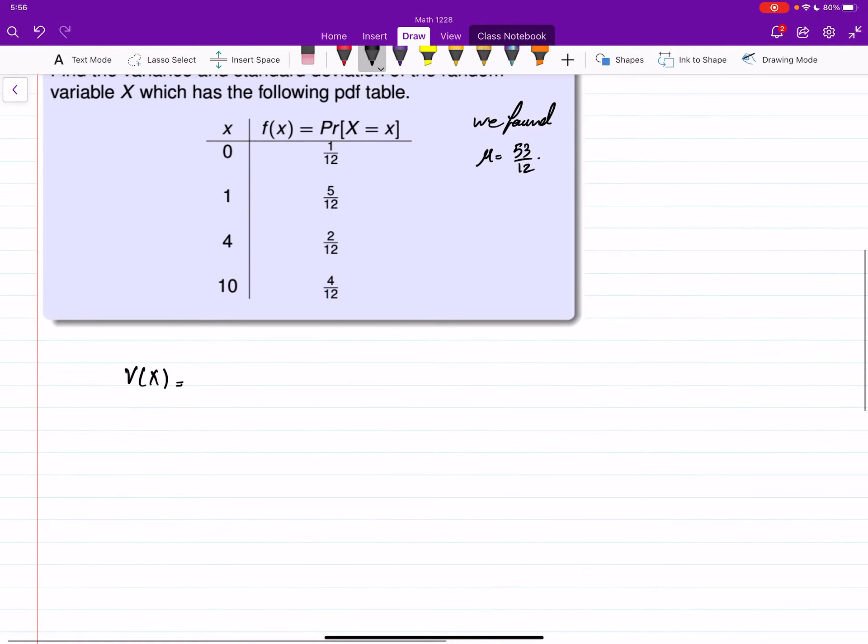You can check back the videos for the mean of a random variable. Now we want to find the variance. The variance is: the first value here is 0, you subtract from that the μ then squared. The second value is 1 minus 53 over 12 then squared. Then there is 4 minus 53 over 12 squared, and then 10 minus 53 over 12 squared. Multiply each one by the corresponding pdf value.